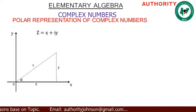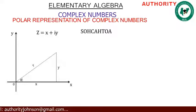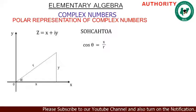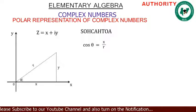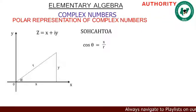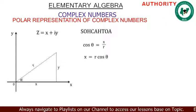Now let's find values for x and y using SOH-CAH-TOA. Let's find cos θ: cos θ equals adjacent over hypotenuse, so cos θ equals x over r. Cross-multiplying to make x the subject, we get x equals r·cos θ.